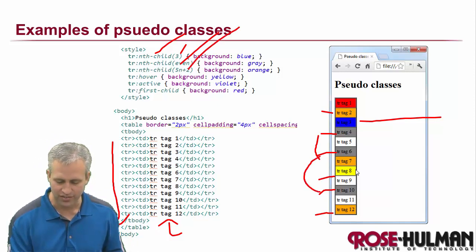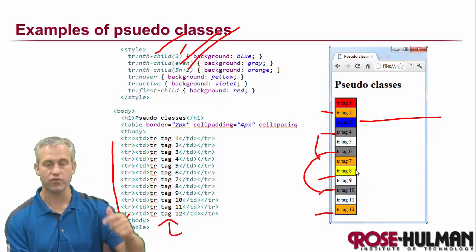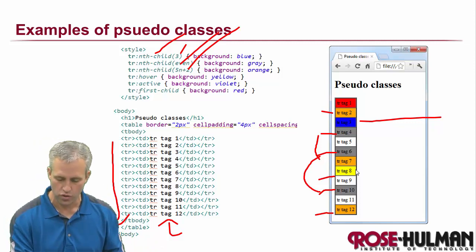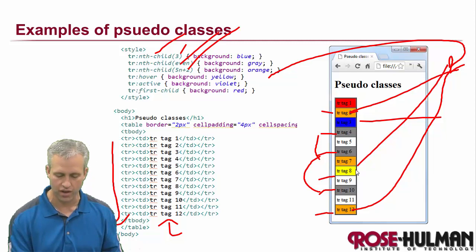And then you can do crazy formulas. So every 5n plus 2, so if n was 0, it would be 2. So that one is orange. And then the 7th one is orange. And then the 12th one is orange. So you can see that that orange rule applied to those guys.